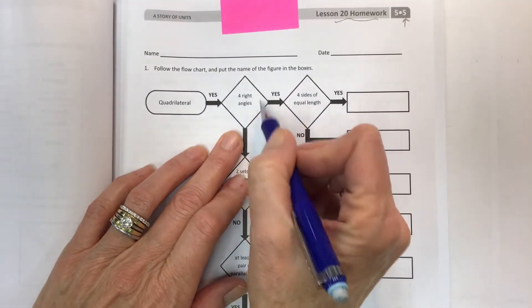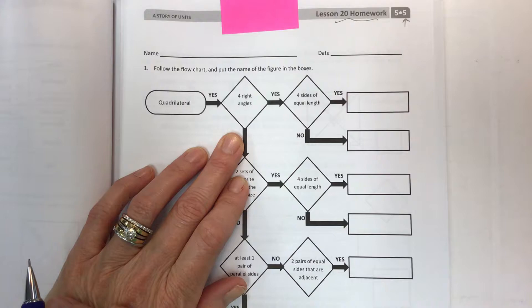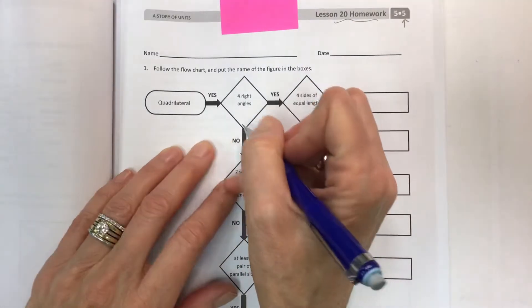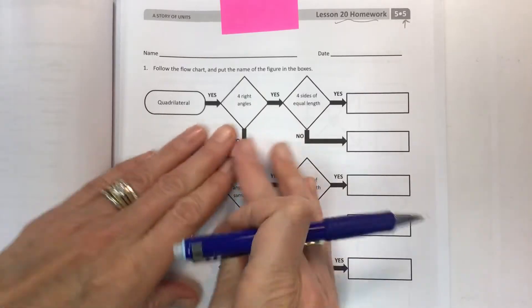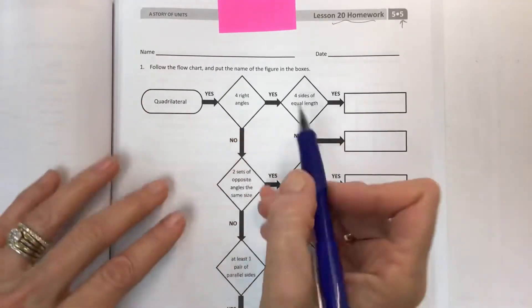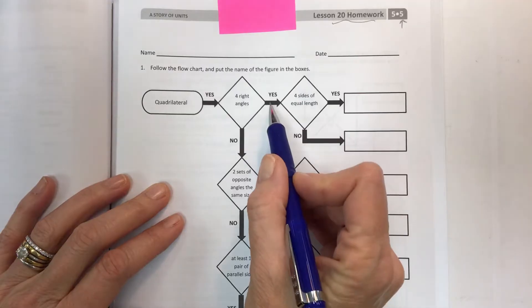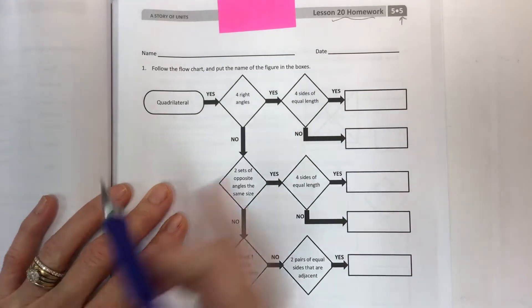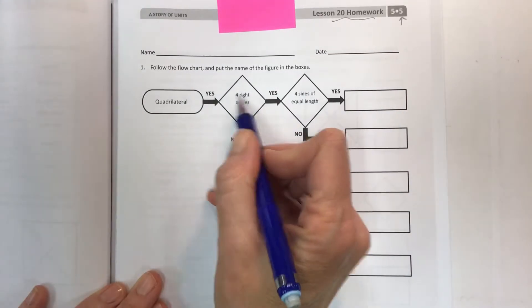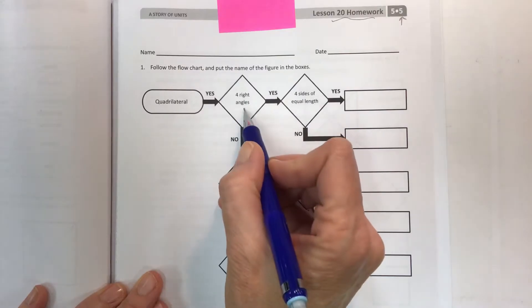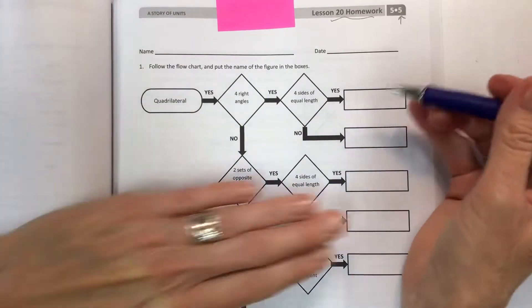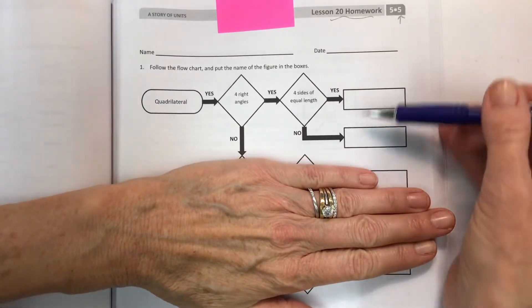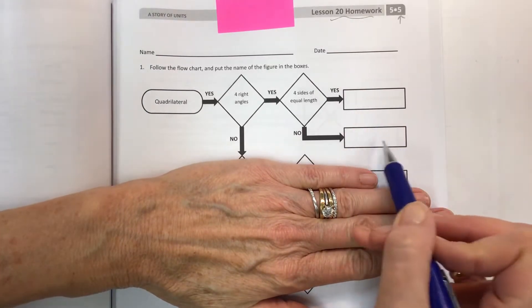Now did all of them have four right angles? Well no, some of them did not. So some of them we're going to get to down here, but for now you're going to focus on those that did have four right angles. So if you're talking about a shape that's a quadrilateral and it has four right angles, you have two choices. And what are they? Here are your two choices: something here and something here.